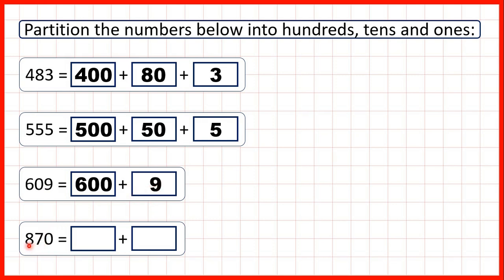And finally, we have 870. This 8 is in our hundreds, so it represents 800 — 8 followed by two zeros, because after the 8 we have two digits. Then we have a 7 in our tens, so that's 70. And our ones digit is a zero, so again we don't need to partition our ones digit, because the value of a zero is always zero. This zero is important because it tells us that the 7 is in our tens, so it stands for 70, and the 8 is in our hundreds, so it stands for 800. But the zero doesn't have any value in itself.